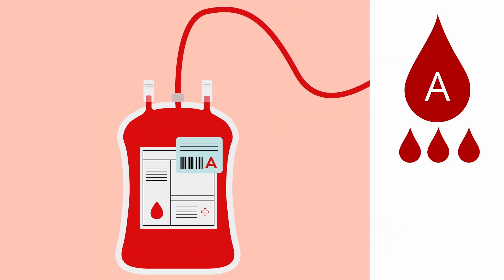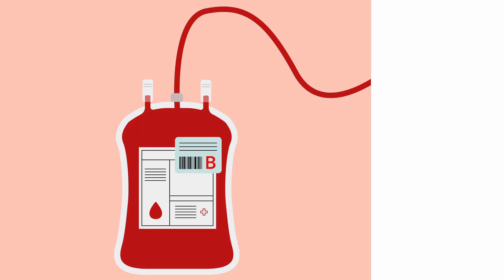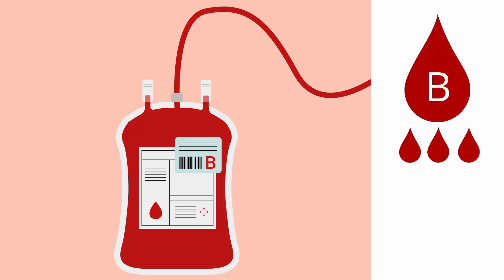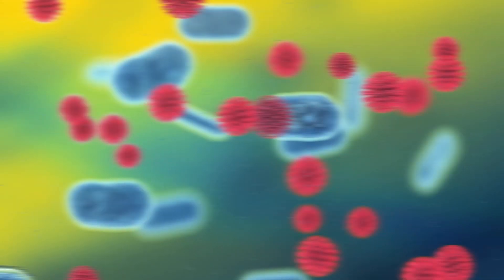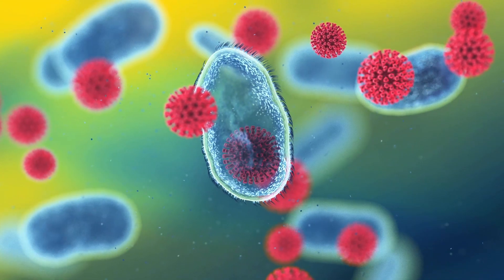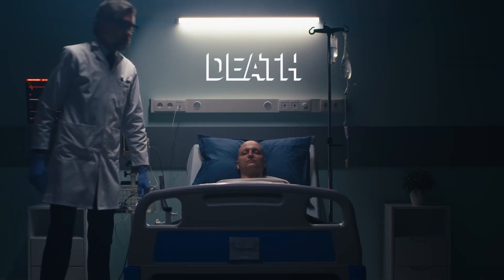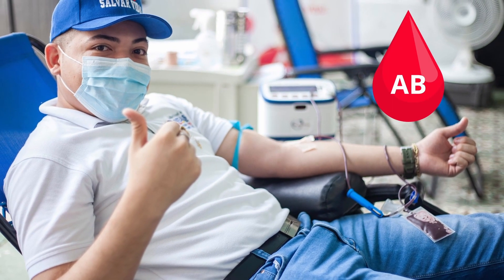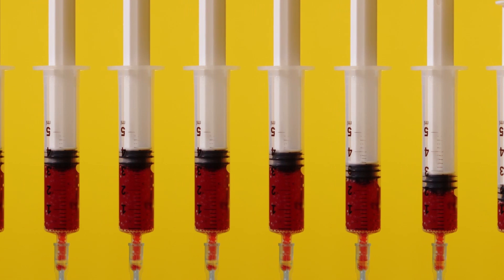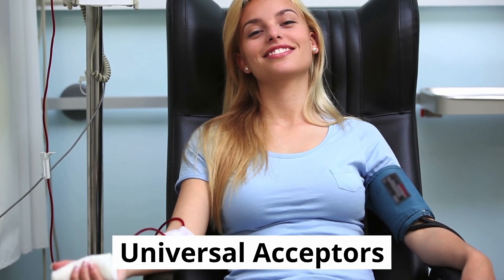If your blood group is A, your body will identify B blood group cells as foreign particles and form antibodies against those B cells. In the same way, those with B blood will produce antibodies against A blood group cells. These antibodies trigger an immune reaction when they encounter their respective antigens, and the immune reaction can be severe and even lead to death. Those with AB blood group do not produce antibodies against either antigen, so any other blood group can transfuse blood to an AB blood group individual, which is why they're called universal acceptors.